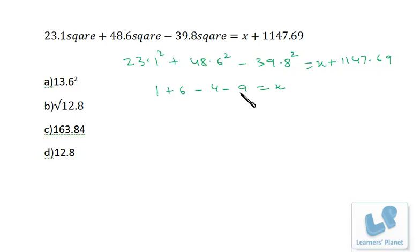So the unit digit will be 4, right? So the unit digit of x will be 4. That's only in this option, because the unit digit of this will be 6, here it's square root of 12.8, and x cannot be in square root.